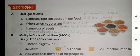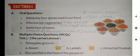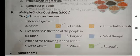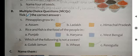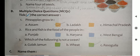Multiple choice questions. Question one: Pineapple grows in — answer: Assam. Question two: Rice and fish is the food of the people in West Bengal.